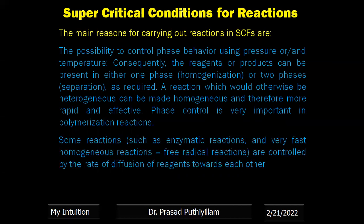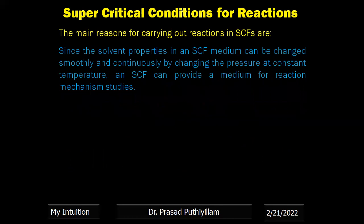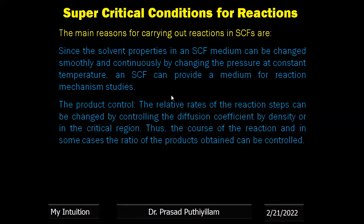Some reactions such as enzymatic reactions are very fast homogeneous reactions and free-radical reactions that are controlled by the rate of diffusion of reagents toward each other. Since solvent properties in a supercritical fluid medium can be changed smoothly and continuously by changing the pressure at constant temperature, supercritical fluid can provide a medium for reaction mechanism studies. Relative rates of reaction steps can be changed by controlling diffusion via density in the critical region, allowing better product control.